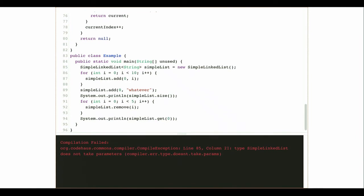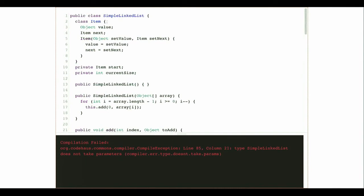The first thing we have to do is parameterize SimpleLinkedList. I'm going to use the type parameter E — E is for an element, the right choice given Java convention. I add this to my declaration. Now I need to go through and find everywhere I'm using that type and replace it with E. The constructor currently accepts an array of Objects — now it should accept an array of type E. My add function takes an index that stays as-is, but now takes a value of type E instead of Object.